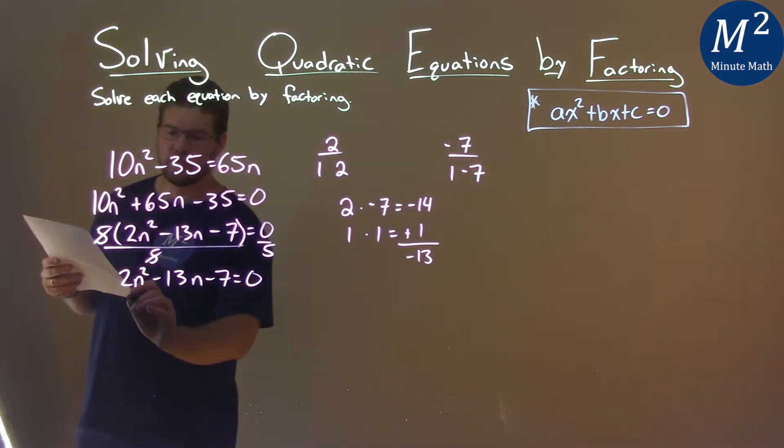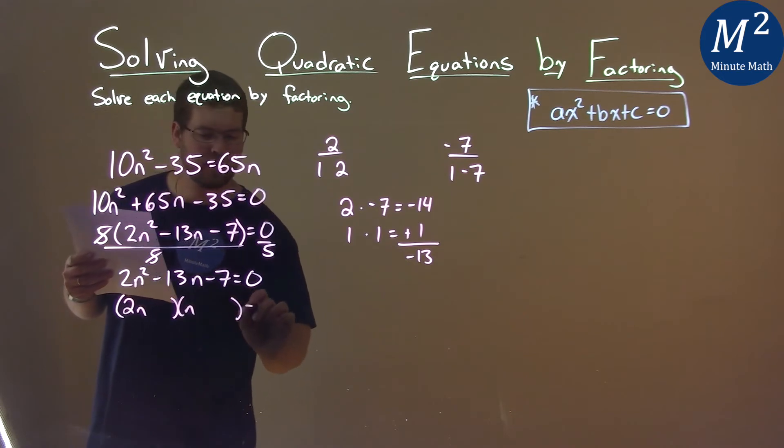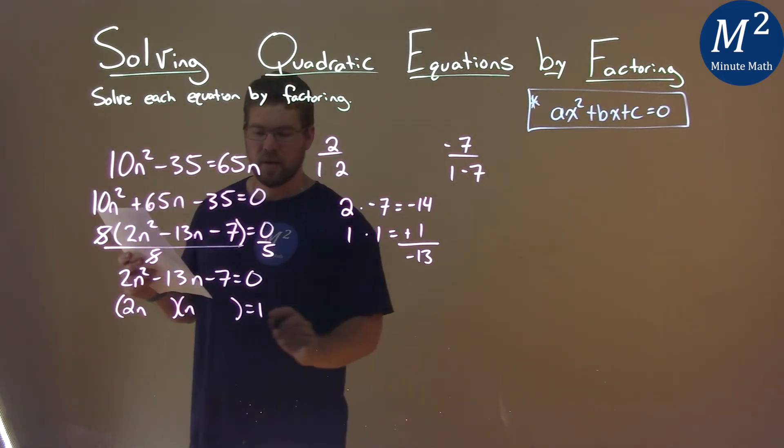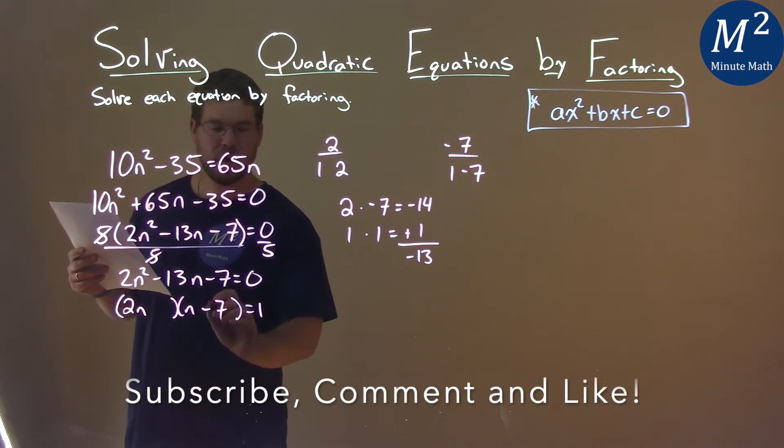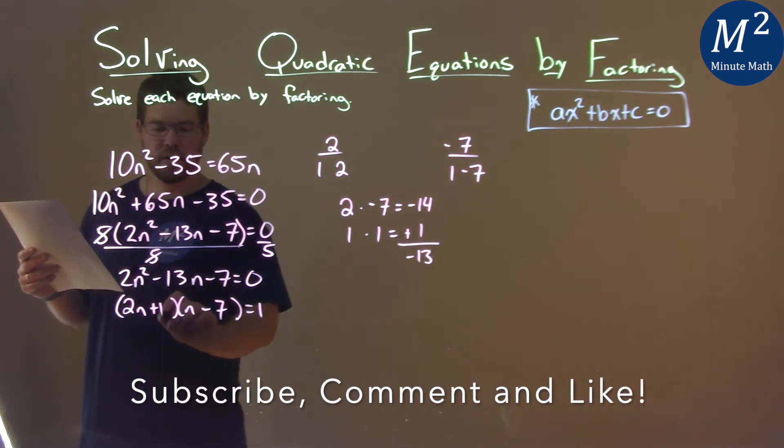So let's make sure we keep this together. We have a 2n here, and an n, and we factor it. 2n gets multiplied by the negative 7, so it has to go on this side. 1 gets multiplied by the 1, so we put a plus 1 here.